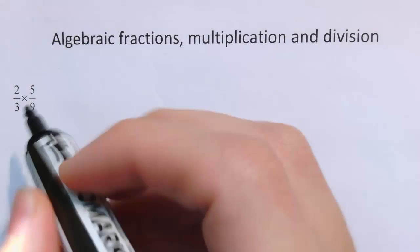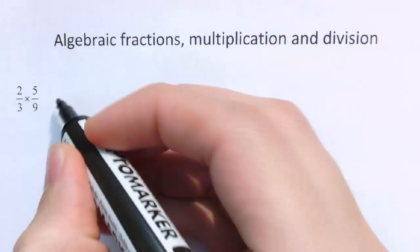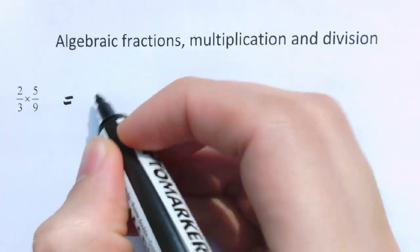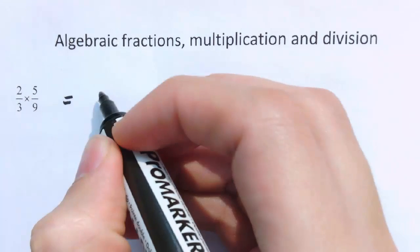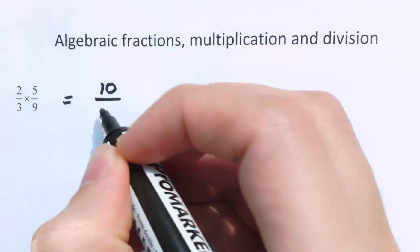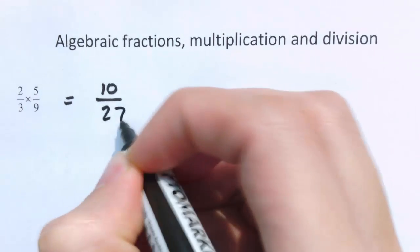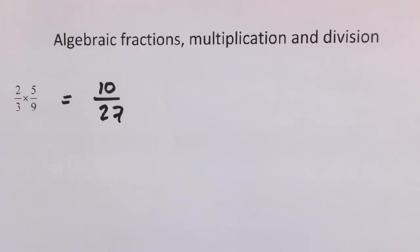For 2/3 times 5/9, we just multiply the numerators together and multiply the denominators together. So 2 times 5 is 10, and 3 times 9 is 27.